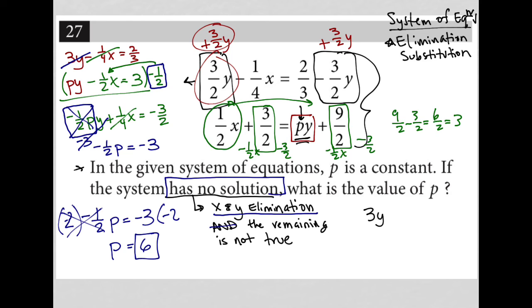So I would have three Y minus one fourth X equals two thirds. And I would have, instead of negative one half p Y, I'd have negative three Y plus one fourth X equals negative three. And that's why this will cross out, this will cross out. I'd have zero equals whatever this is.